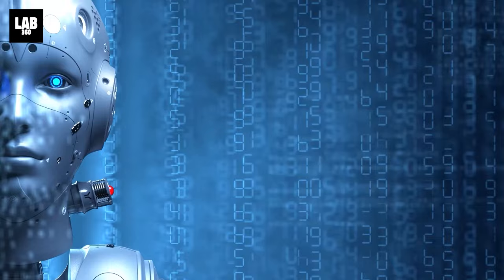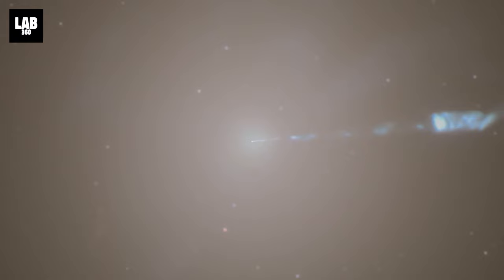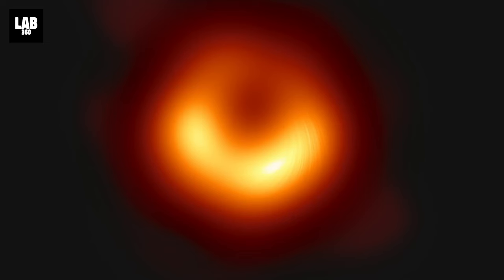Now, two years later, scientists have used a new machine learning technique to reprocess the original data and reveal a new, sharp view of the blazing orange material swirling around M87, the supermassive black hole at the heart of the Messier 87 galaxy. Let's see how it looks like.